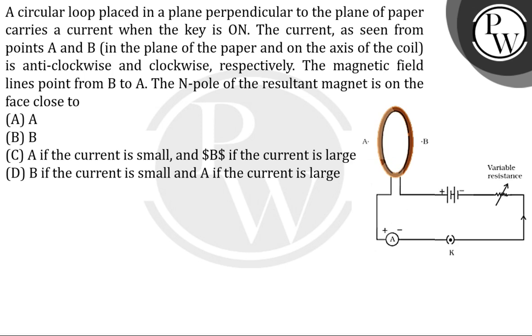The magnetic field lines point from B to A. The north pole of the resultant magnet is on the face close to... So we have to find the north pole.